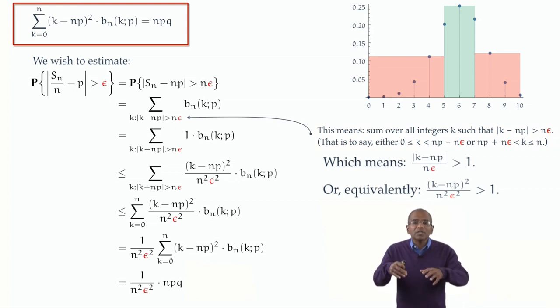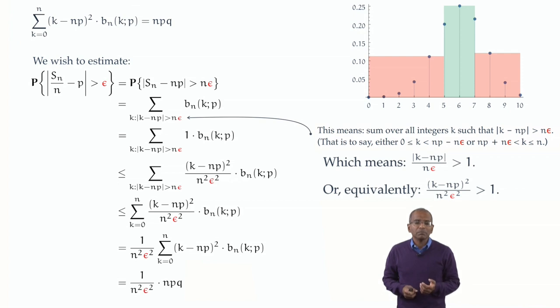And abruptly, things have simplified enormously. Cancel an n in the numerator and the denominator. Recall that q is 1 minus p. And we've got an elegant, simple, unexpected formulation. The probability that the relative frequency of successes deviates from p by as small an amount as epsilon or more is no more than p times 1 minus p divided by n epsilon squared. We should take a deep breath and savor this. We have no right to expect something as elegant and so simple and so beautiful. This is magnificent. So go ahead, applaud yourself. This is wonderful.